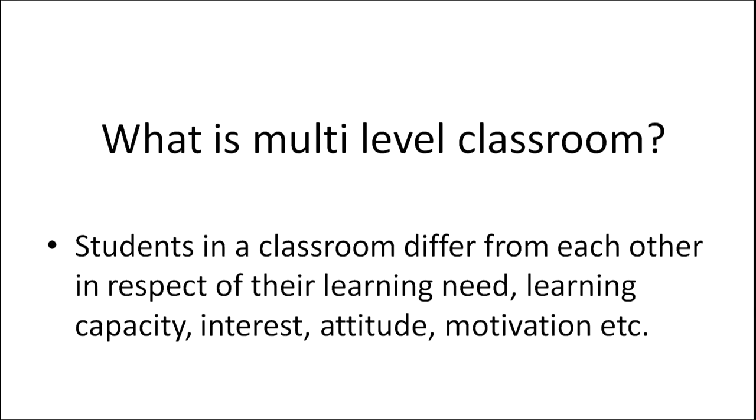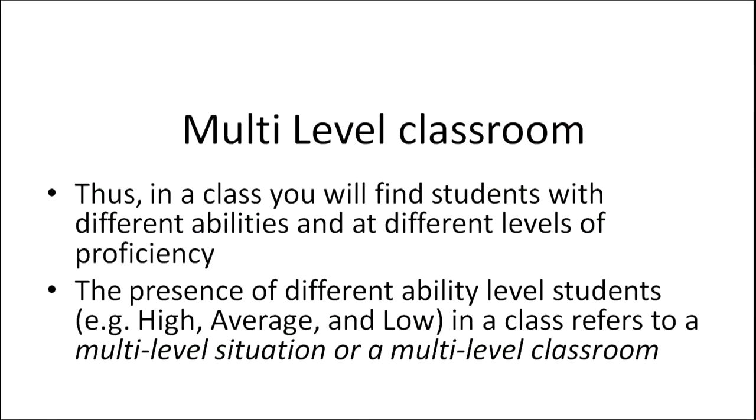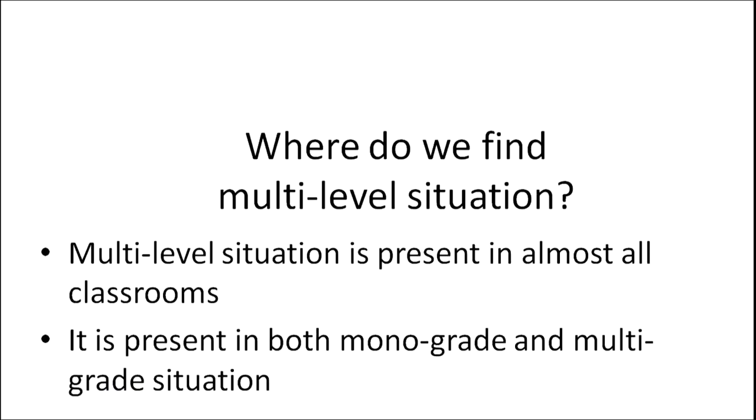A classroom with different kinds of students with different abilities and at different levels of proficiency is called a multi-level classroom. The presence of different ability level students — high, average, and low — in a class refers to a multi-level situation. Multi-level classrooms are found in almost all classrooms, present both in mono-grade and multi-grade situations.